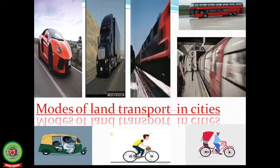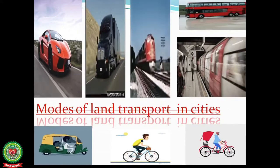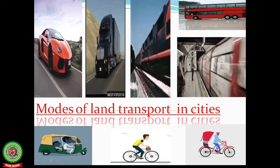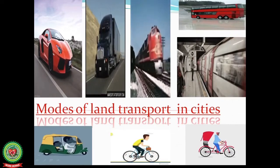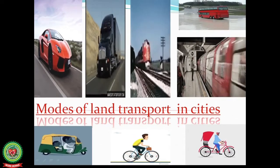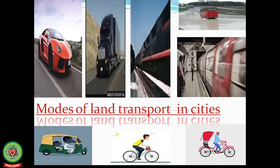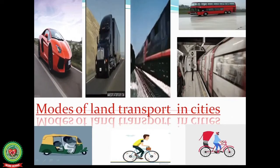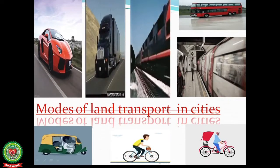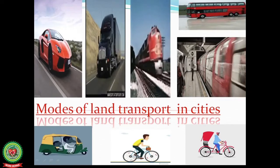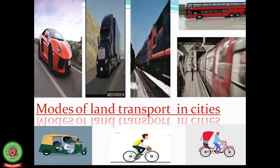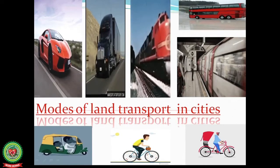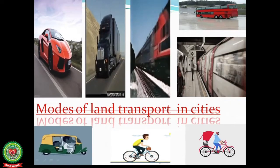Modes of land transport in cities are car, truck, train, bus, metro train, auto rickshaw, cycle, and rickshaw. Most of the modes of land transport run on petrol or diesel.